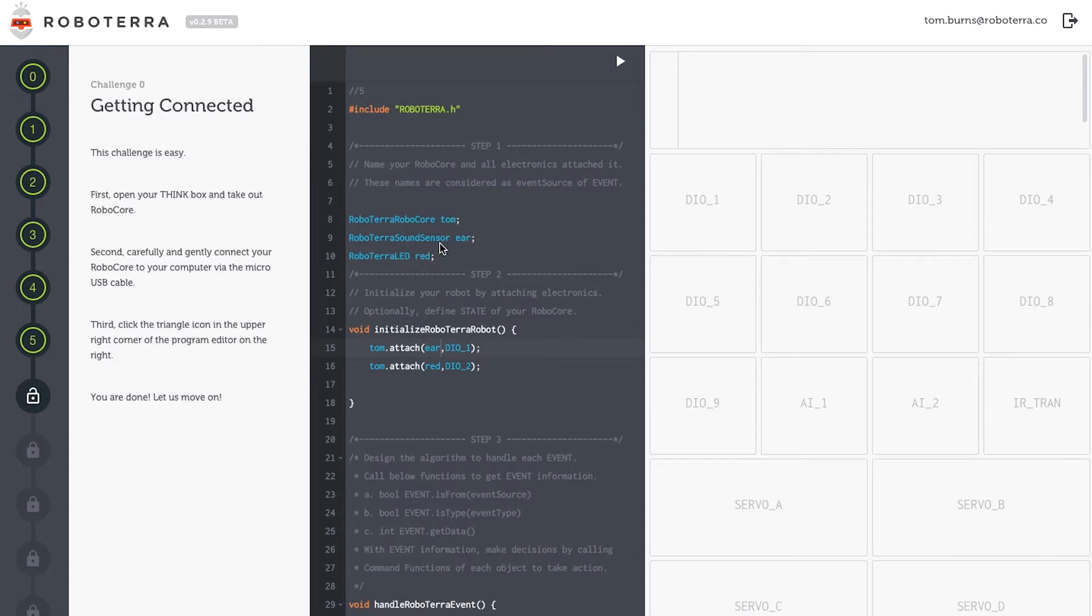Next use the class name RoboTerra Sound Sensor for my sound sensor, and I'll name it Ear. And last but not least, class name RoboTerra LED for my red LED, and I've named that Red.